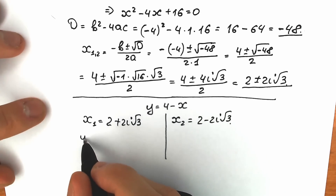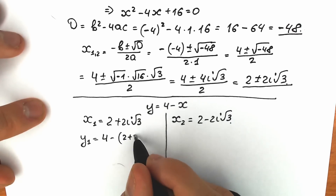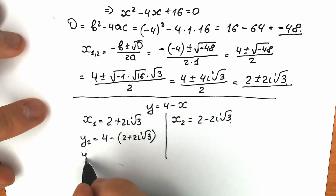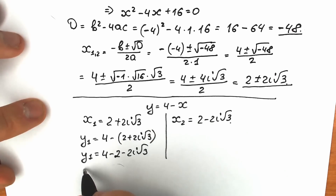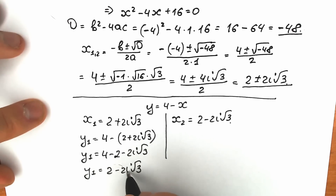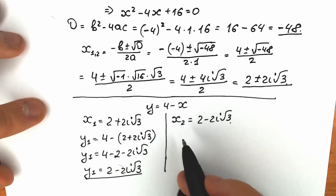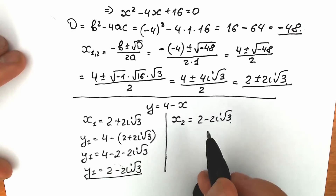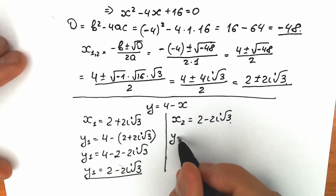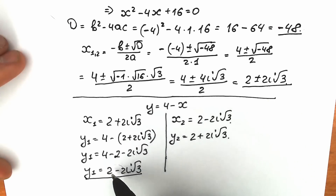So y₁ equals 4 minus (2 plus 2i square root of 3), which gives y₁ equals 2 minus 2i square root of 3. And correspondingly y₂, with the same structure but opposite sign, equals 2 plus 2i square root of 3. So we have plus-minus and minus-plus pairs.